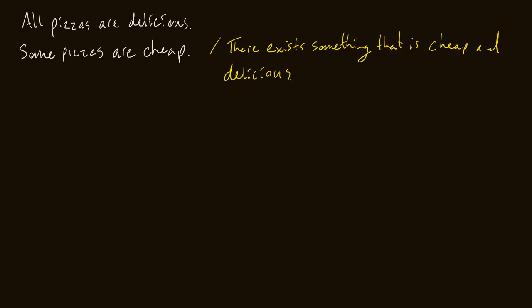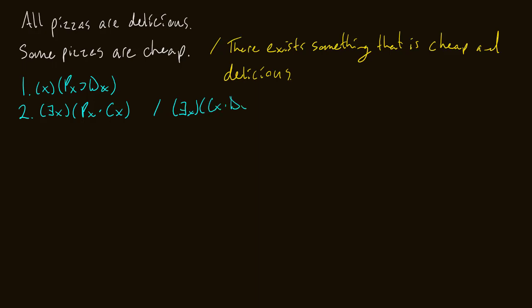Let's symbolically represent our premises. Premise one: all pizzas are delicious — 'for all x, if x is a pizza, then x is delicious.' Premise two: some pizzas are cheap — 'there exists an x such that x is a pizza and x is cheap.' The conclusion we want to reach is that there exists something that is cheap and delicious — 'there exists an x such that x is cheap and x is delicious.' Clearly this is a conclusion we should be able to get to: all pizzas are delicious, some pizzas are cheap, so we can definitely find a pizza that is cheap and delicious.